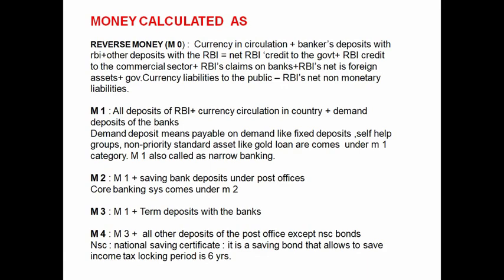Money can be calculated by five types: M0, M1, M2, M3, and M4. M0 is also called reserve money. It equals currency in circulation plus bankers' deposits with RBI plus other deposits with RBI. This equals: net RBI credit to the government, plus RBI credit to the commercial sector, plus RBI claims on banks, plus RBI net foreign assets, plus government security liabilities to the public, minus RBI net non-monetary liabilities.